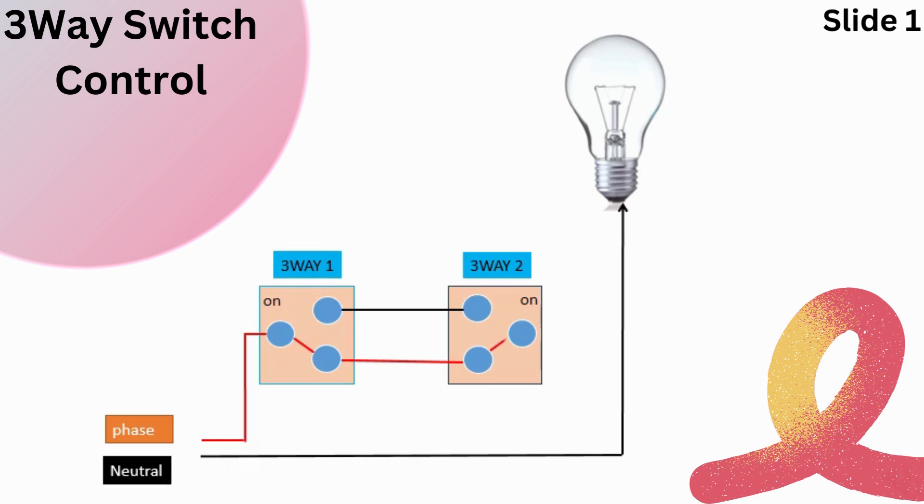From there, power continues to the light fixture, turning it on. The key to understanding three-way switches is that they use a traveler wire to carry the electrical signal between the two switches.